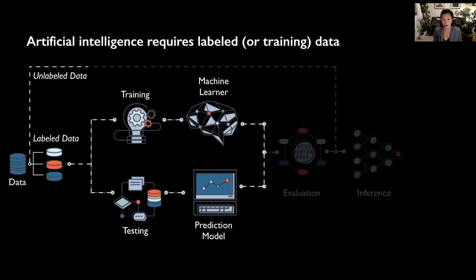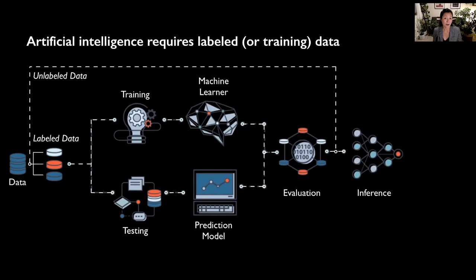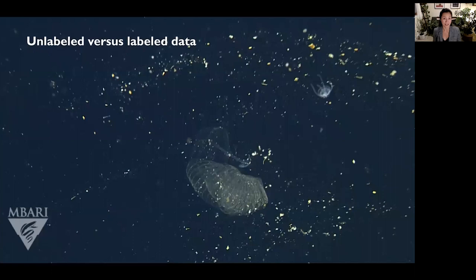Labeled data is used for training a machine learning algorithm, and once trained, it is tested. If the trained model performs poorly during evaluation, more labeled data is used, and this process repeats itself. If the trained model performs well, the model is run on the unlabeled data, and presence and absence of objects or features are then inferred. It is this process of inference that can enable automated processing of visual data, but our biggest bottleneck is generating labeled data.